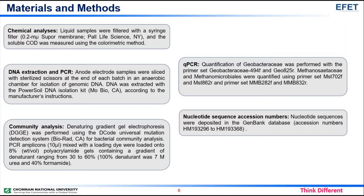Community analysis: Denaturing gradient gel electrophoresis was performed using the DCode universal mutation detection system for bacterial community analysis. PCR amplicons mixed with loading dye were loaded onto 8% polyacrylamide gels containing a gradient of denaturant ranging from 30 to 60%. QPCR: Quantification of Geobacteraceae was performed with the primer set Geobacteraceae-494F and GO-825R. Methanosaeta and Methanomicrobiales were quantified using primer sets MST-702F/MST-862R and MMV-282F/MMV-832R.